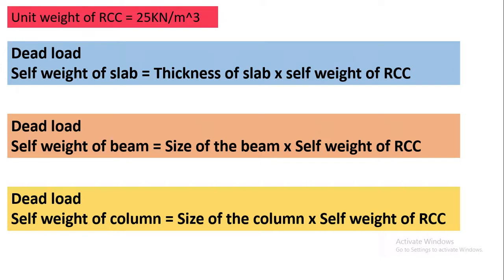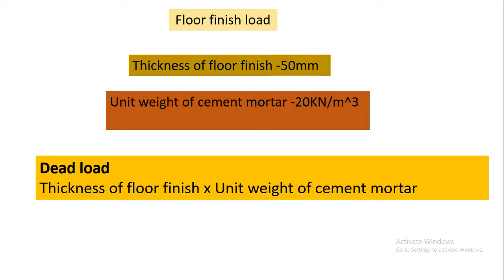We multiply the self-weight for slab, column, and beam. Next, let's see the floor finish load. The thickness of the floor finish is assumed to be 50 mm. The unit weight of cement mortar is 20 kN per cubic meter. So the floor finish load equals thickness of floor finish multiplied by unit weight of cement mortar.